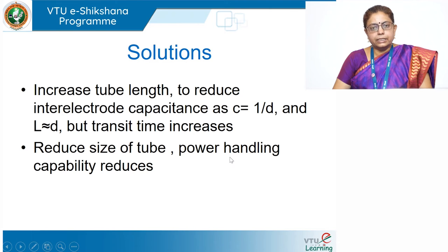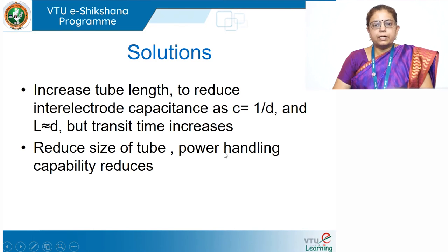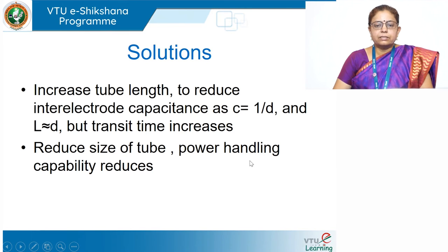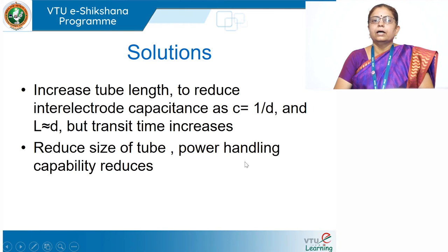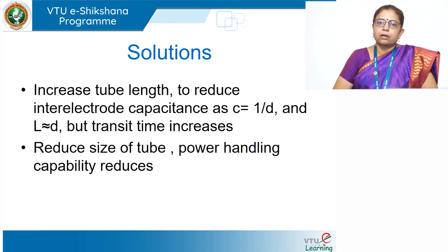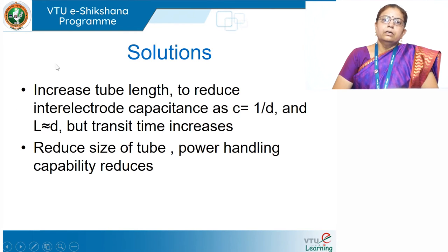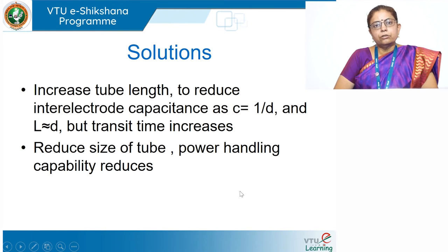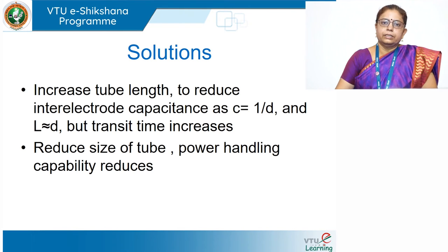The solution and how new microwave tubes came about will be seen in the next lectures when we take up the reflex klystron. To summarize this first part of the lecture: there are three important effects — inter-electrode capacitance, lead inductance, and transit time effect — which prevent vacuum tubes from functioning at high frequencies. The second important part of this lecture is velocity modulation of electrons.